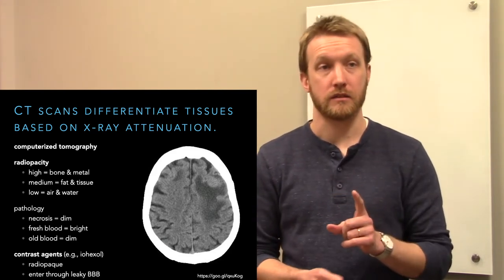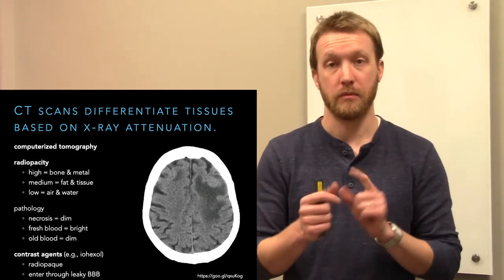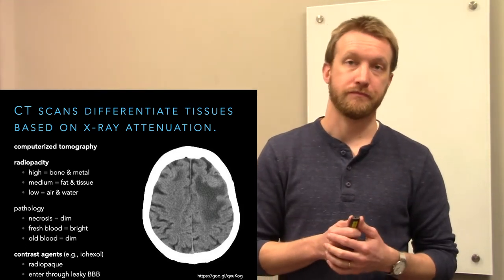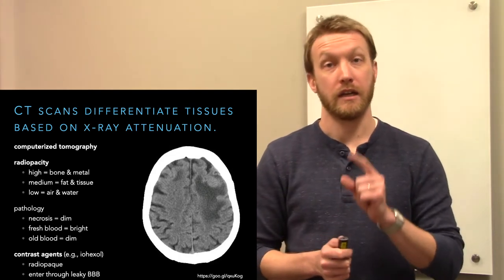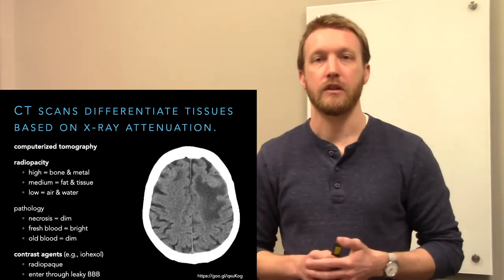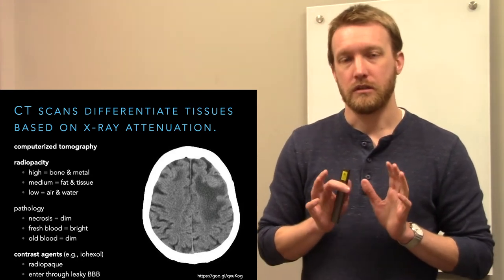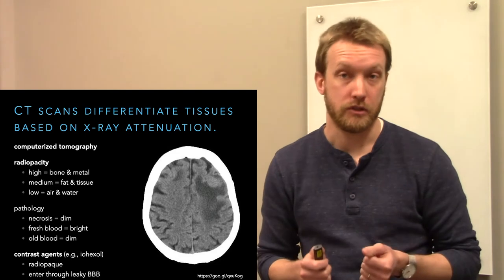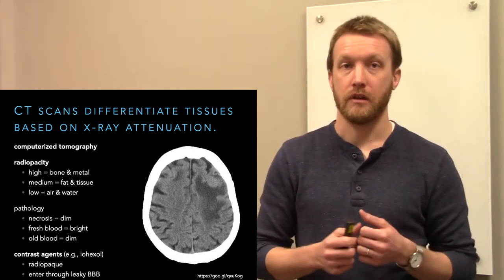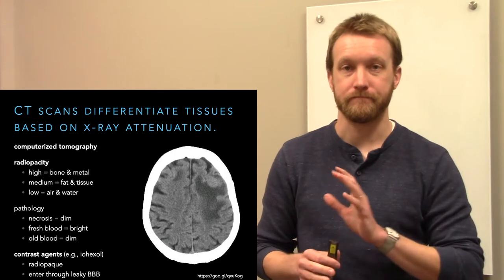We can see big things. There's definitely a big thing going on over here on the left, our right. Keep in mind, these images are always flipped. So your right is the patient's left. We can clearly see some area that's a little bit dim in this image. Dimness is indicative of damage, could be necrosis, could be perhaps inflammation that's increasing the amount of fluid. Whatever it is, it's a problem.